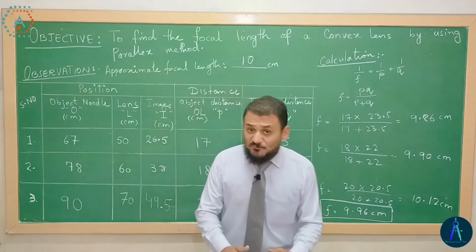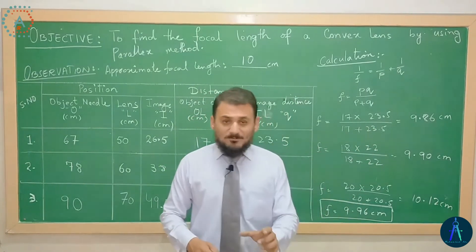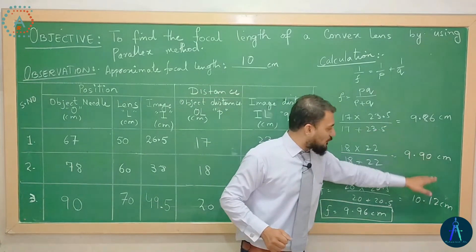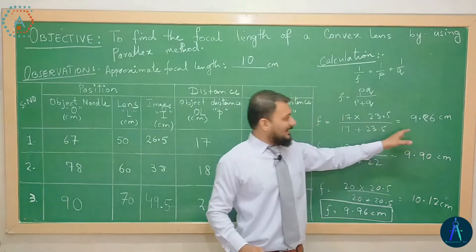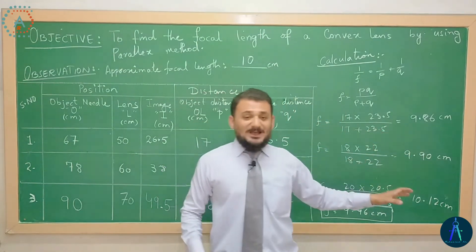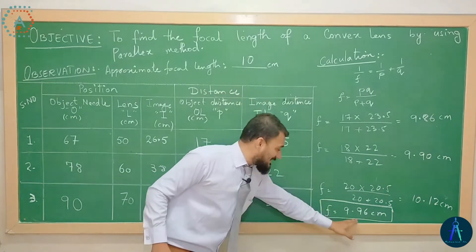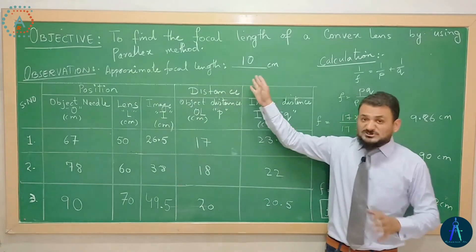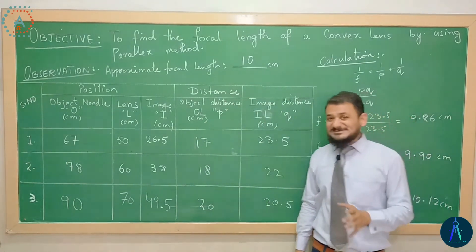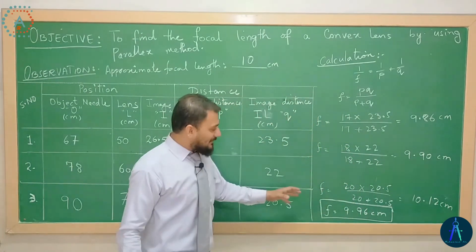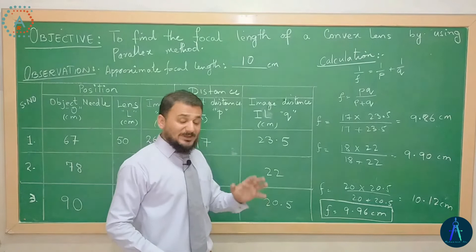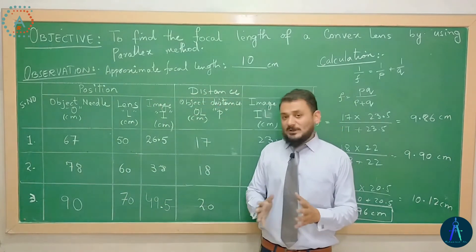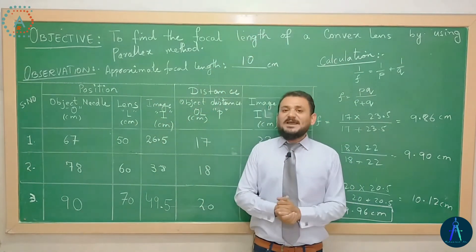3 set of performances سے 3 focal lengths آ گئیں اس same convex lens کی۔ Finally میں نے 3 focal lengths کا average find out کیا by taking the sum of these 3 values and dividing by 3. Our result is 9.96 cm۔ ہم نے جو lens use کیا تھا اس کی approximate focal length 10 cm تھی اور experimental value 9.96 ہے جو کہ approximate focal length کے very close ہے۔